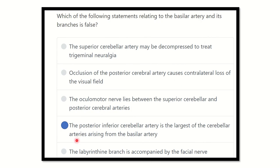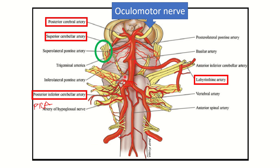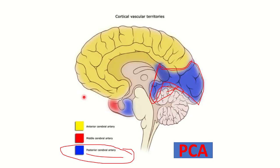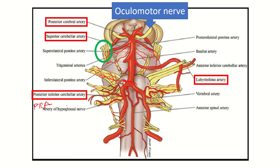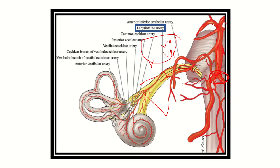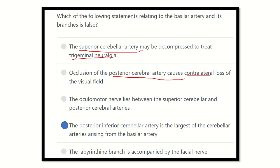Our final answer: the statement that the posterior inferior cerebellar artery is the largest branch of the basilar artery is false. In fact, the posterior cerebral artery is the largest branch, supplying the occipital cortex. Reviewing the other options: the superior cerebellar artery may decompress trigeminal neuralgia — true; occlusion of the posterior cerebral artery causes contralateral vision loss — true.